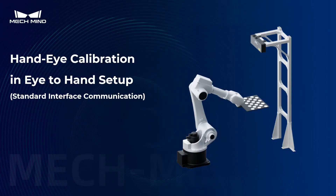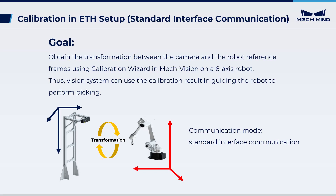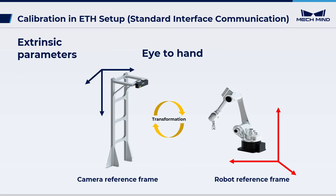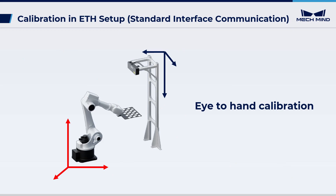Now let's do extrinsic parameter calibration for the eye-to-hand setup. In this video, we will obtain the transformation between the camera and the robot reference frames by calibration. Performing hand-eye calibration in standard interface communication mode is slightly more complex than in master control communication. In the eye-to-hand setup, the camera is fixed on a frame independent of the robot. Extrinsic parameters represent the transformation between the camera and the robot reference frames, and we need to obtain them by calibration.